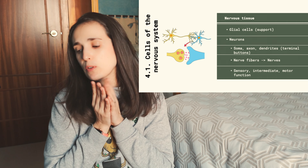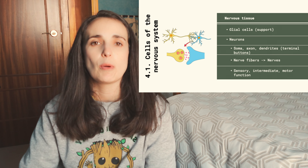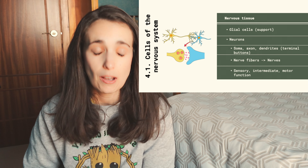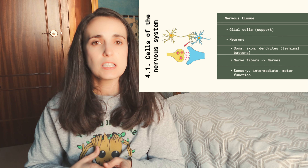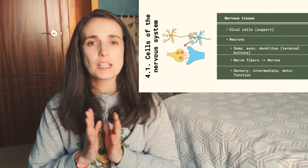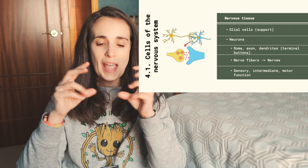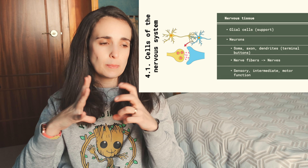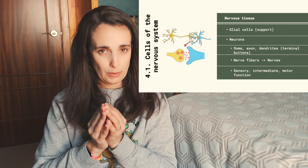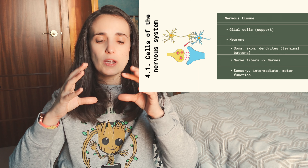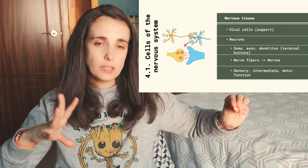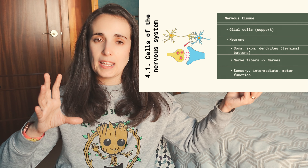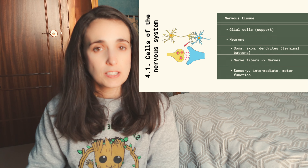We won't talk more about the glial cells; we will talk more about the neurons. As every cell, the neurons have a nucleus, but the shape of the cells is not round anymore — they have a very specialized shape. There is a kind of head called soma, which is the body, and the nucleus and most of the cytoplasm and organelles are there. From that soma, we have a long, thick ramification called the axon. And from the soma and from the end of the axon, there are smaller branches called dendrites.